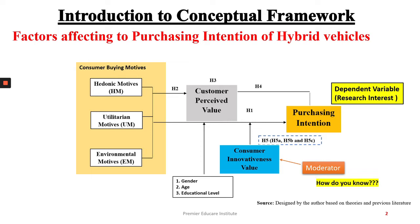We have to test the moderating effects of CI on the relationship between HM and PI, on the relationship of UM and PI, and on the relationship of EM and PI. So we have to test the moderating effects of CI, or consumer innovativeness, on all three relationships, as we did in the mediation analysis. This is a categorical moderator.